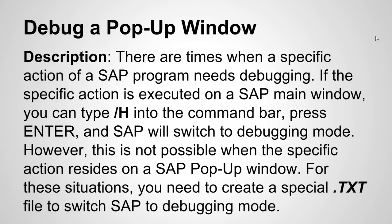If the specific action is executed on a SAP main window, you can type slash H into the command bar, press Enter, and SAP will switch to Debugging mode. However, this is not possible when the specific action resides on a SAP popup window.